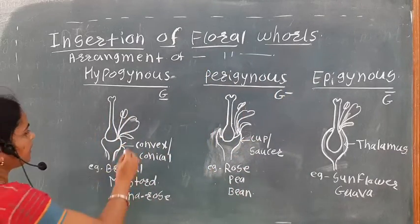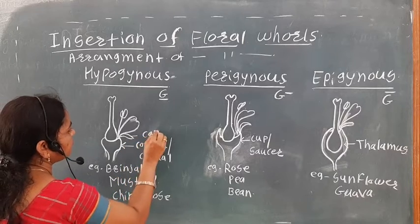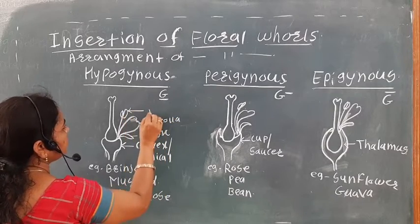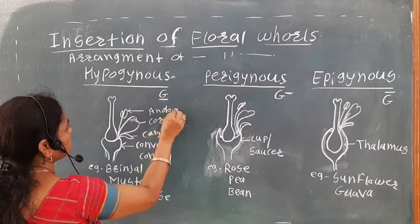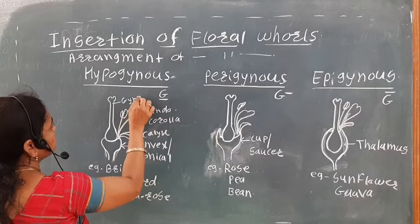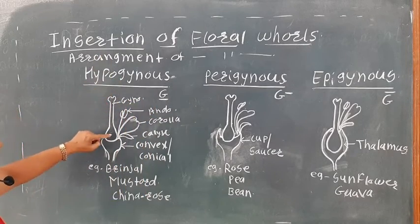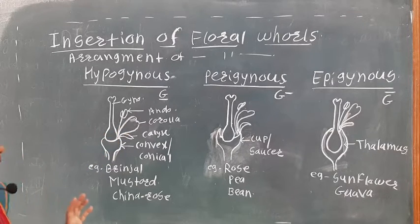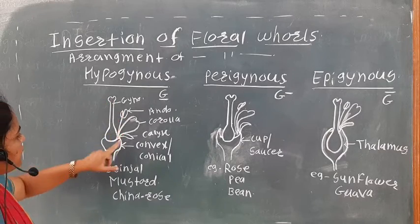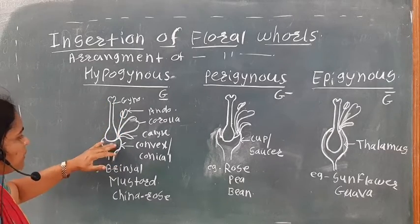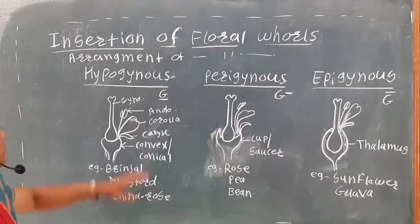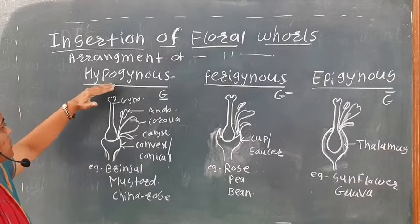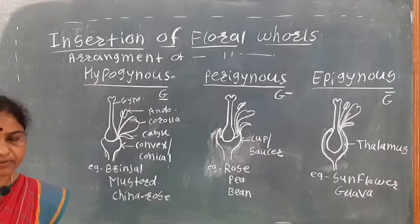So here we consider the arrangement of the gynoecium and the other floral parts on the thalamus. This is what we call the insertion of the floral whorls. First, let us see the hypogynous flower.